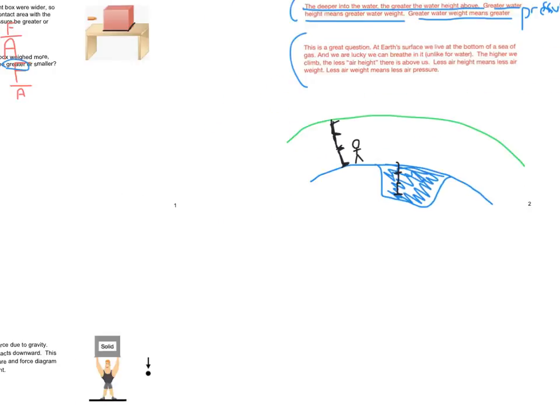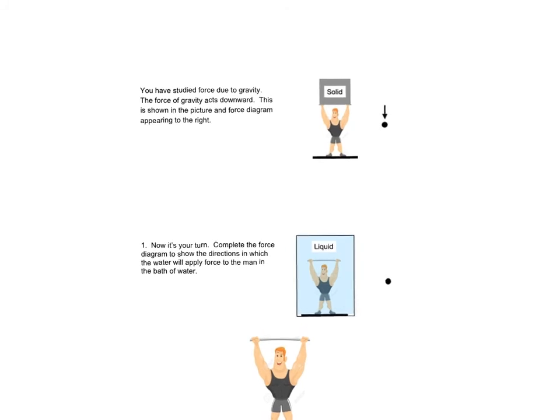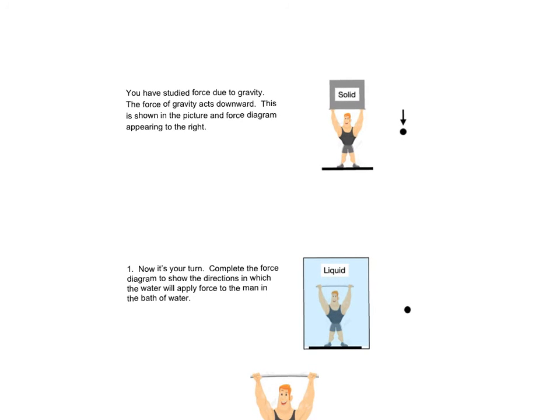Okay, and then lastly, we'll go to the new stuff. And once again, I'm starting with a solid here, and I'm connecting it to material from earlier this year. You've studied the force due to gravity, the force of gravity acts downward. This is shown in the picture to the right, in the force diagram to the right. So I would say that all of this here should be somewhat familiar from the stuff we did earlier this year. The only difference I did here is I had the arrow pushing into the dot. When we were doing force diagrams earlier this year, we had generally represented an object with a dot, and then we would draw the arrow coming out of it. Here I did it a little differently, but I had the arrow pushing into the dot. But basically, gravity for a solid, gravity just points downward, and that's what we learned earlier this year.